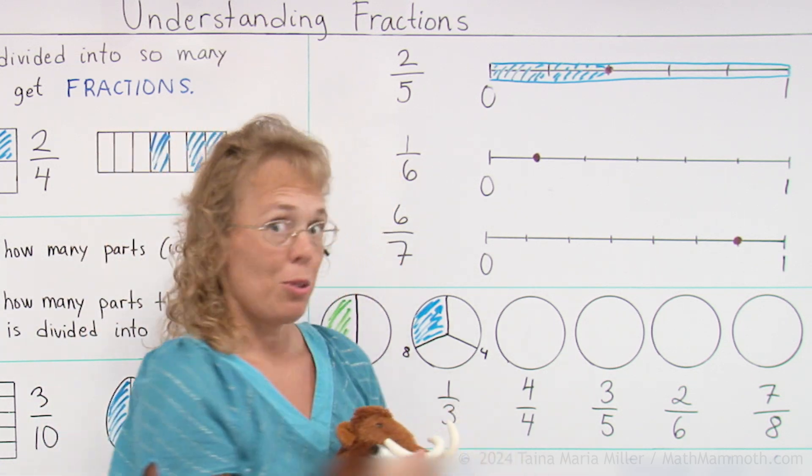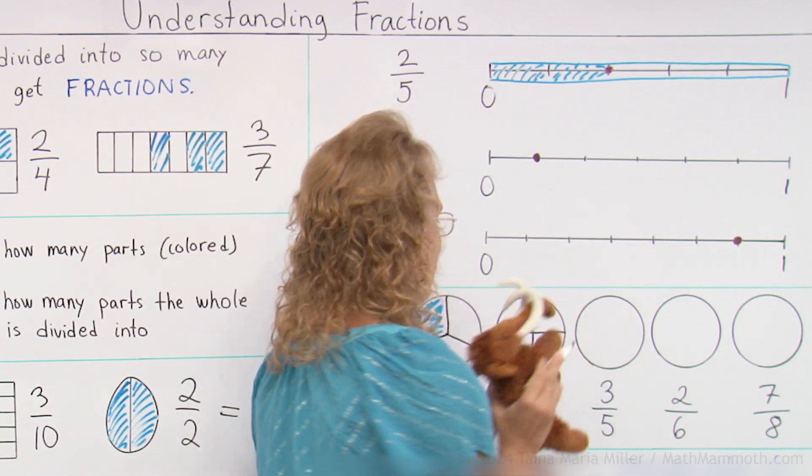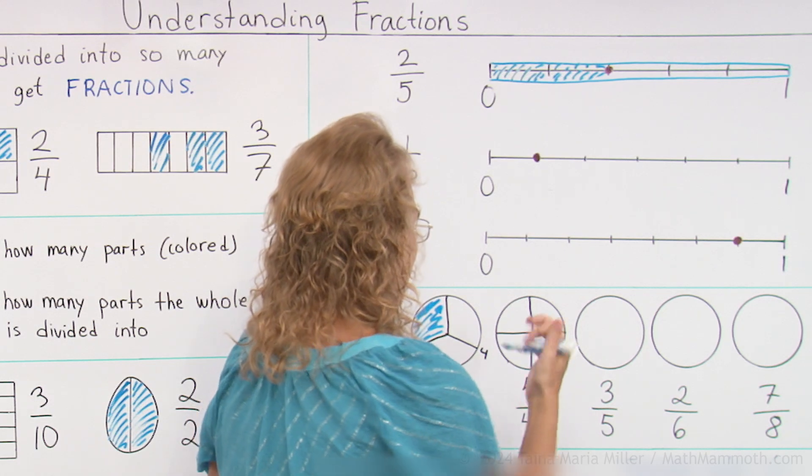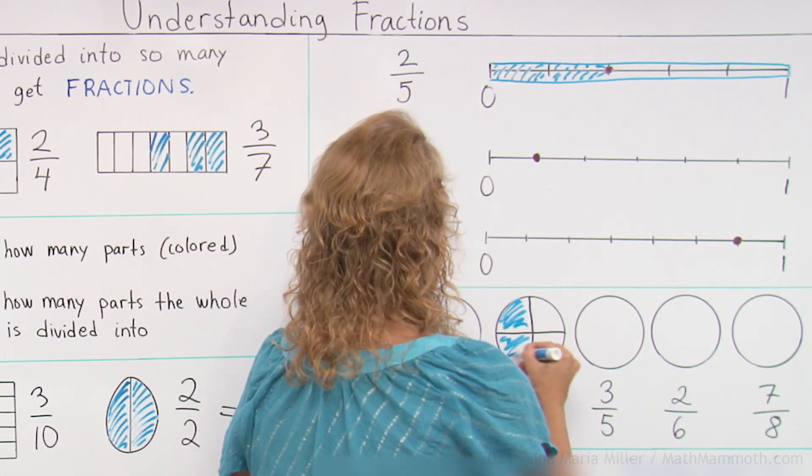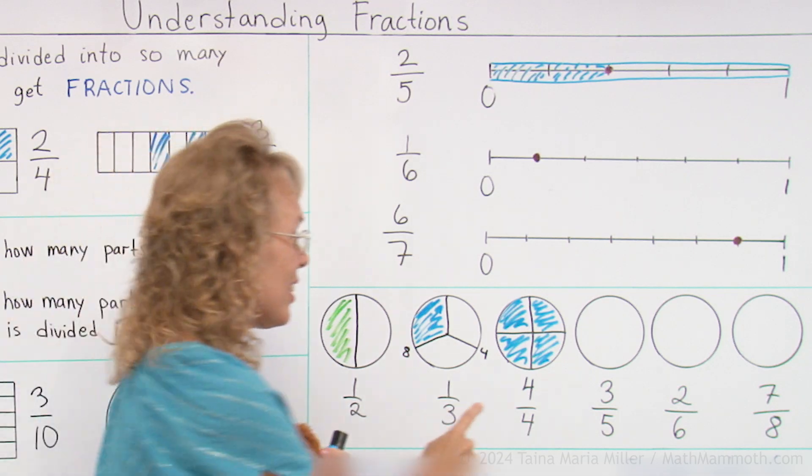For the next one, we need fourths. Fourths are pretty easy. You just draw a cross inside. Four fourths means I color every one of them. This is again one whole pie. So this is equal to one.